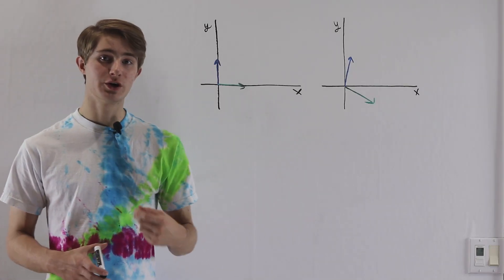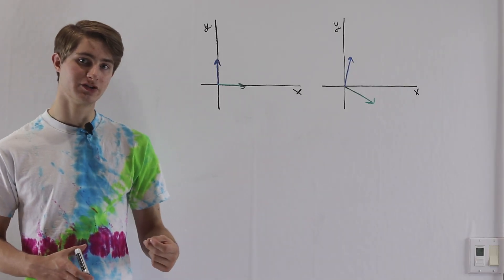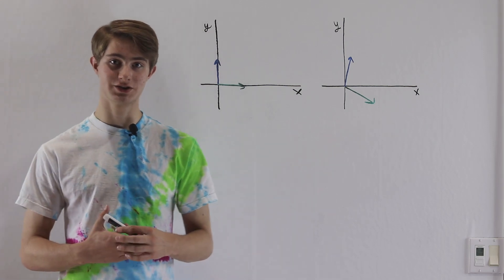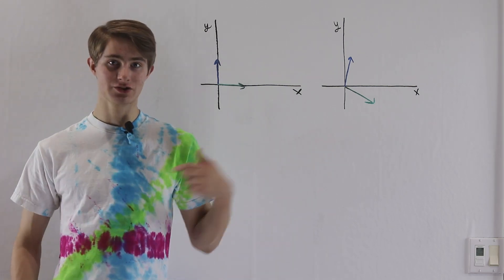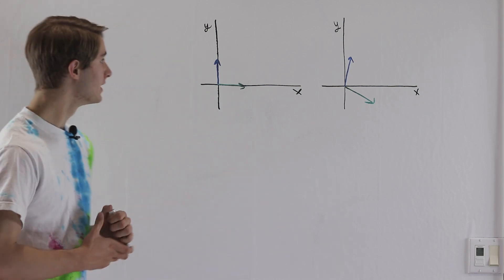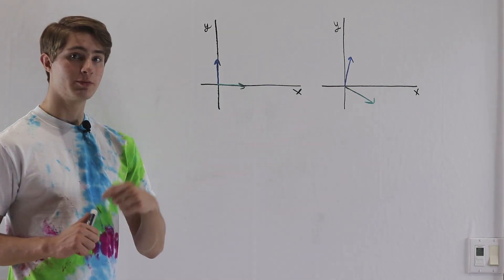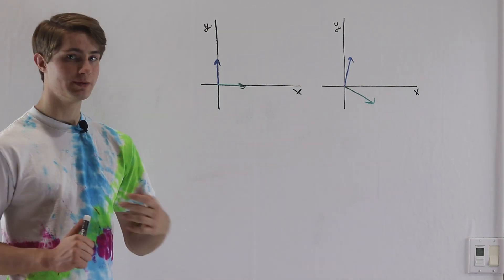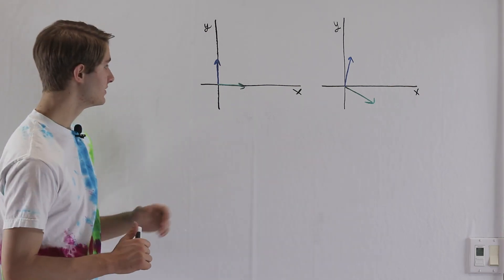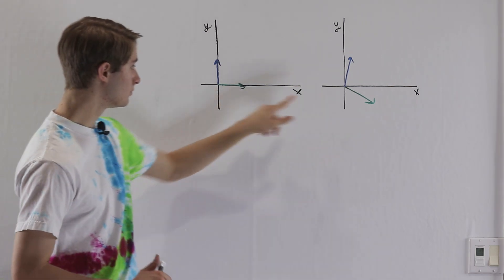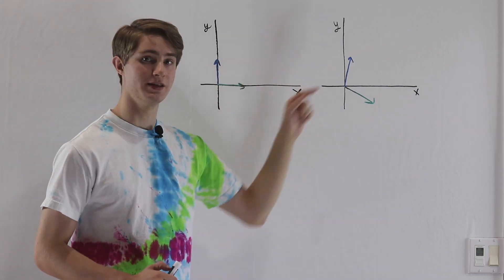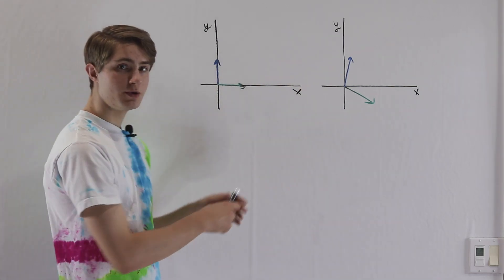We are going to talk about the determinant of a matrix and how it relates to inverses and the linear dependence of vectors. As such, I've worn my XYZ plane shirt for this video. To start off, we're going to talk about one way to think about matrices, which is that we look at the columns of a matrix as representing where the vectors (1,0) and (0,1) get moved when we apply the matrix.